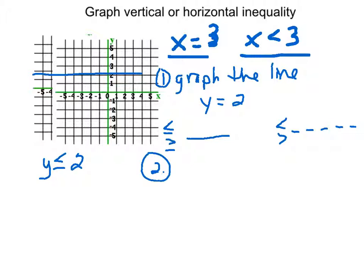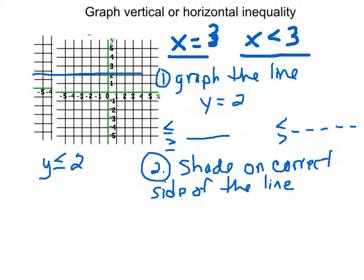Step two is you want to shade on the correct side of the line. This is actually pretty easy when you're doing vertical or horizontal lines. It's a little bit trickier when you're doing any linear inequality. In our case, you just need to think: it's saying shade all of the numbers that are less than or equal to 2. So look at your line you've drawn. Are all the numbers above it less than or equal to 2, or are all the numbers below it less than or equal to 2? All of the numbers below it are less than or equal to 2, so we just shade it like that. That's all you have to do. Those are the steps that we're going to use for all of these.